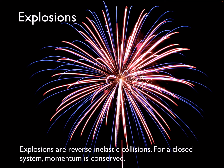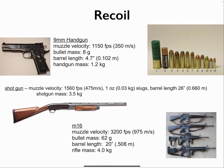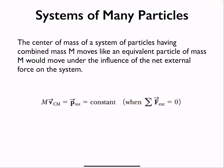Thinking about collisions and center of mass: explosions are sort of reverse inelastic collisions. An inelastic collision is objects colliding and sticking together; an explosion is one object splitting into multiple objects - we can think about this in terms of recoil. For many particles, we sum all of the momenta and they should add up to zero. In an explosion, the initial momentum is zero, and each piece has momenta that sum to zero.